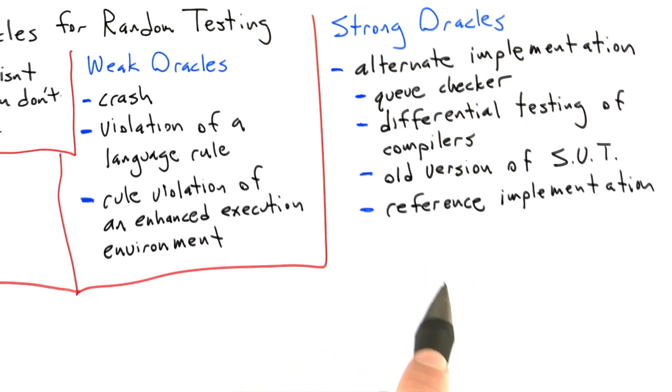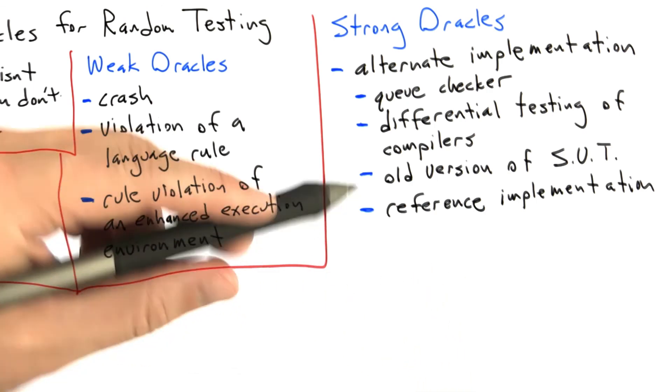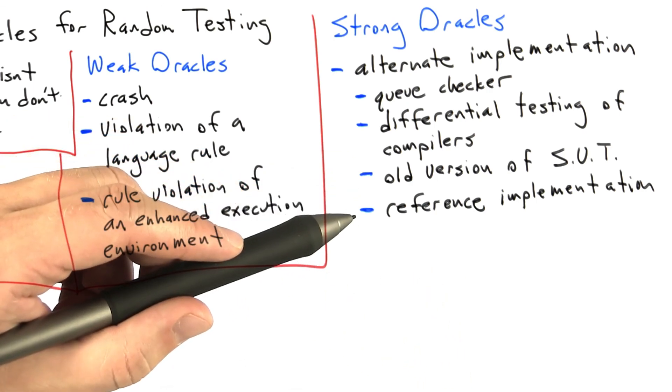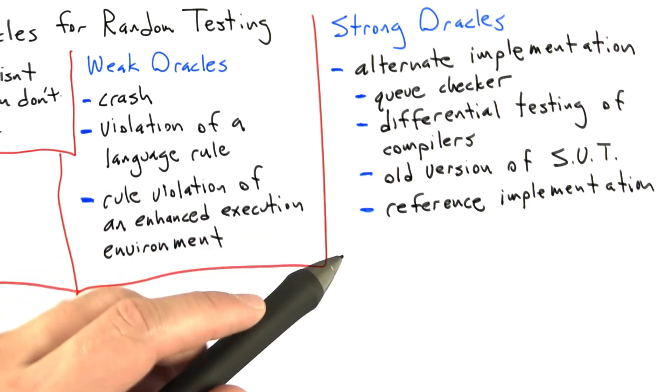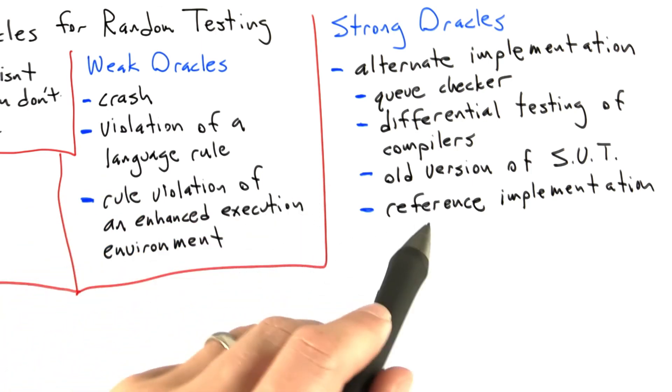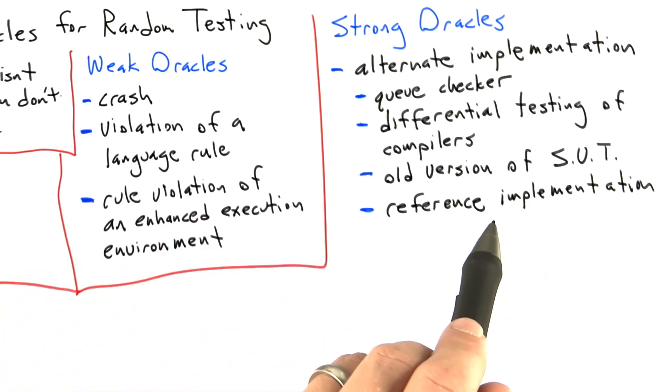The best kind of alternate implementation you could have is a reference implementation. That is to say, some sort of implementation of the specification that you can trust. For example, if I wanted to implement an extremely high-performance Python compiler, I would use the regular CPython implementation as the reference implementation, and that would be treated as correct.